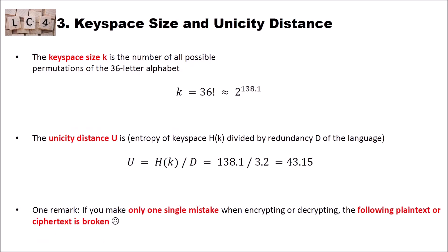Now that we know how the cipher works, let's have a look at the key space size and at the unicity distance of the cipher. The key space size K is clearly the number of all possible permutations of the 36 letter alphabet. This is basically our key. So K is 36 factorial. These are all the possible 36 letter alphabets. And this is about 2 to the power of 138.1. So the cipher has a quite large key space.